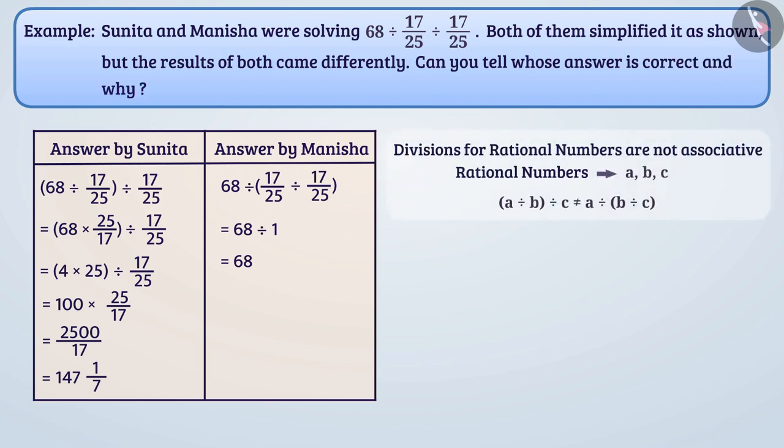Divisions for rational numbers are not associative. That is, groups cannot be created in any way in operation of a division. Here,